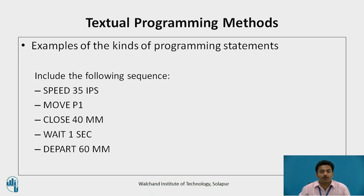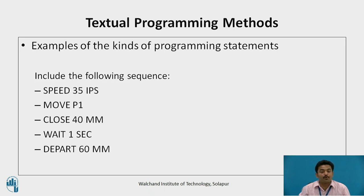Some examples of programming statements found in textual robot languages include the following sequence: Speed 35 IPS, Move P1, Close 40 mm, Wait 1 second, Depart 60 mm. This series of commands tells the robot that its velocity at the wrist should be 35 inches per second. The Move statement indicates the robot is to move its gripper to point P1 and close to an opening of 40 mm. It is directed to wait one second before departing from P1 at a distance of 60 mm above the point.